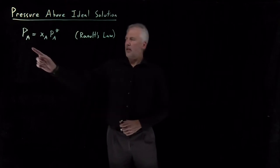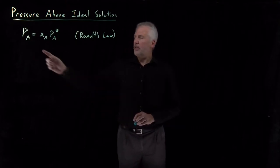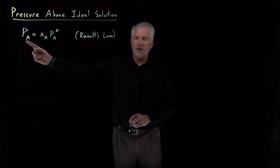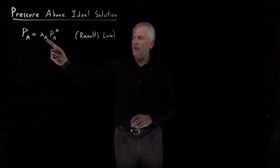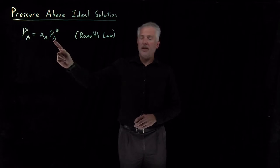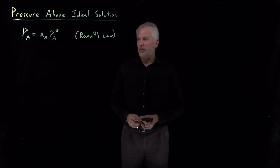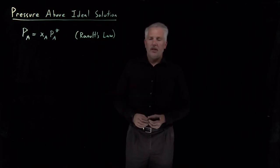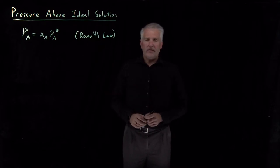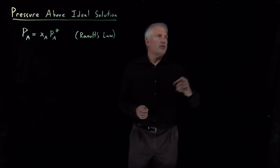Raoult's Law tells us for a solution — a mixture of two liquids — the partial pressure of one component above that solution can be calculated if we know the composition of the solution, in particular the mole fraction of that component, and the vapor pressure of the pure component. That tells us everything we need to know to calculate the total pressure above that solution.